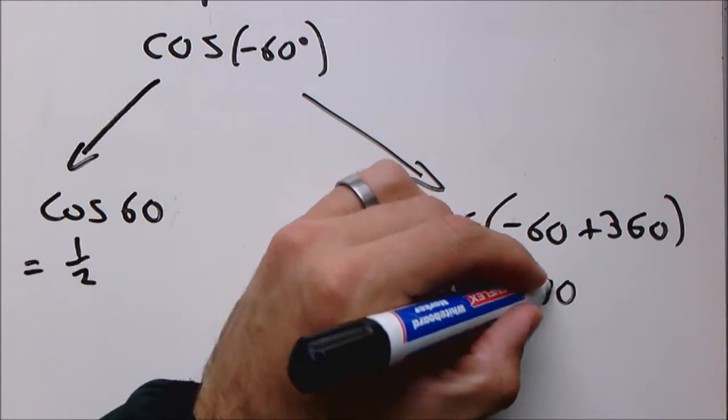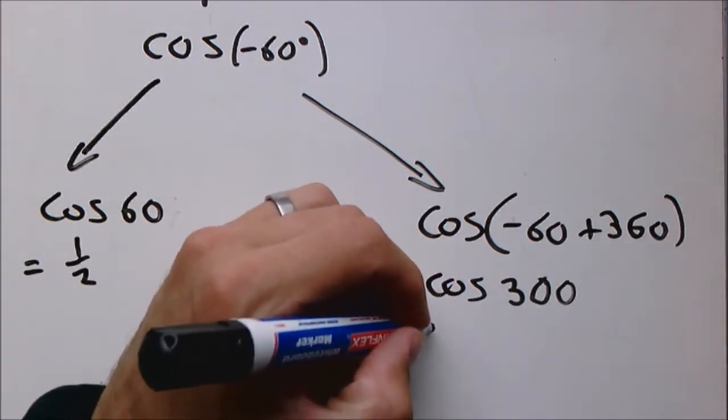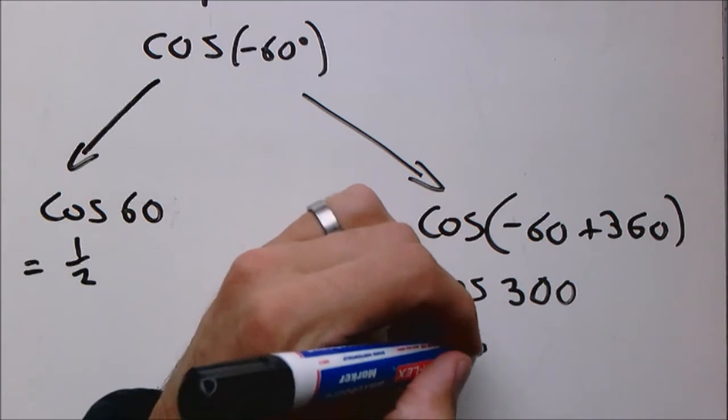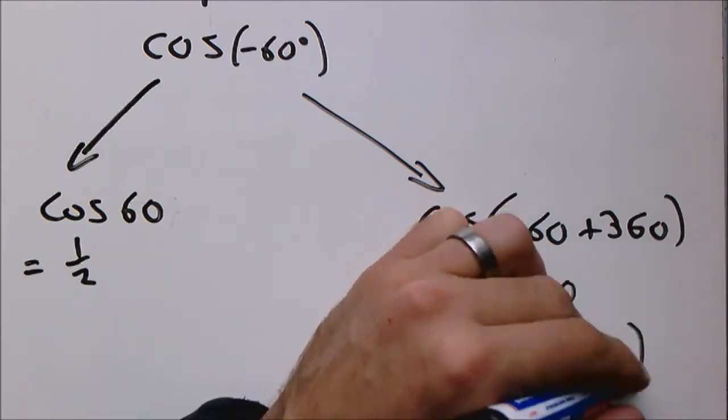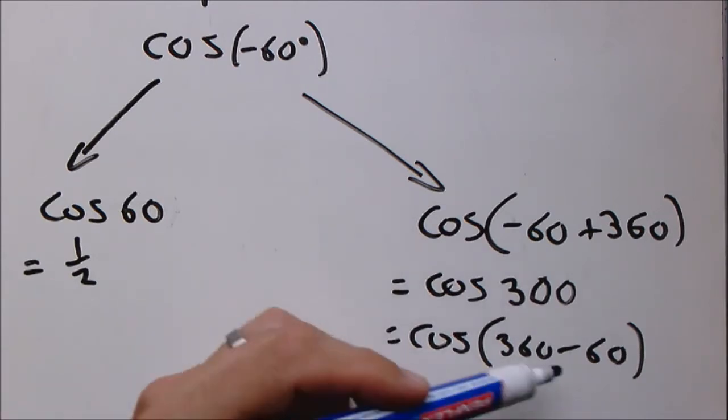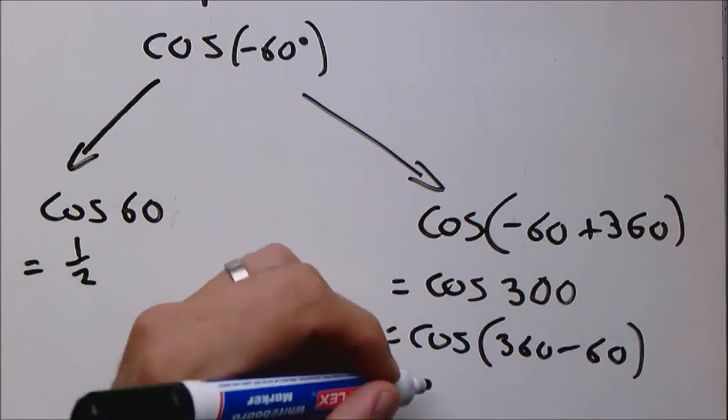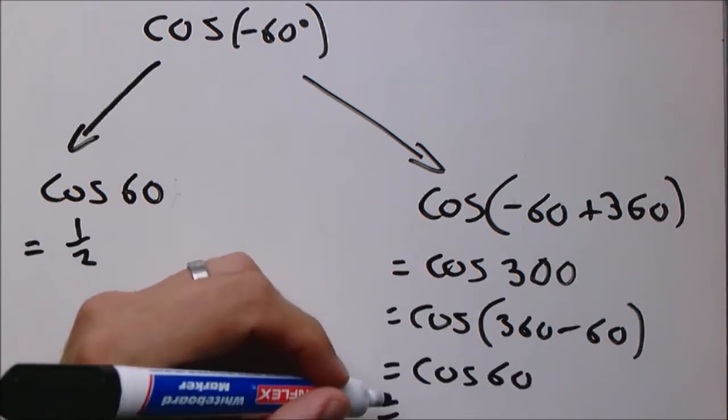And now we apply the exact same way like we've always been doing. What's the closest to 300? Is it 360, 180, or 90? It is 360. So we can express cos 300 as 360 minus 60. And then we know this is the fourth quadrant, and cos is positive in the fourth quadrant. So this is the same as cos 60, which is equal to a half.